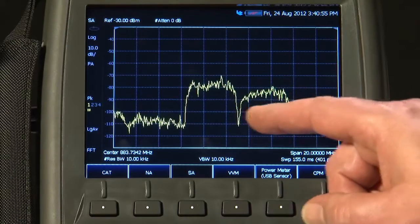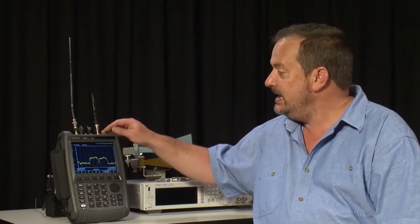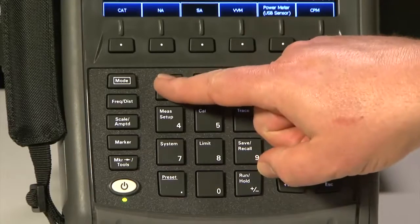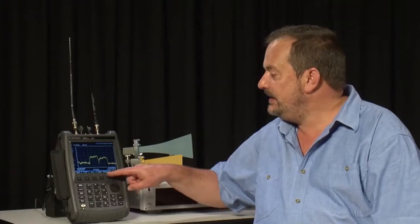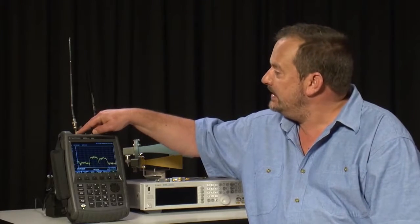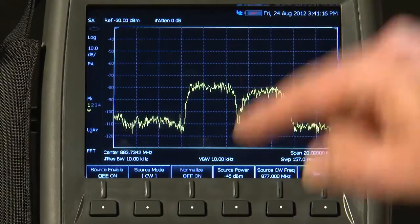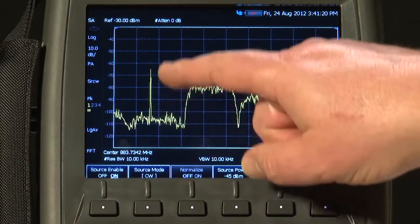Here we are monitoring a couple of spread spectrum signals using this antenna that is plugged into the FieldFox's Spectrum Analyzer input. If I press the Measure key and Source, then we can generate a signal out of the FieldFox's second port here through this second antenna. Currently, it is turned off, so let me just press Source Enable to turn that on, and here you can see the signal.